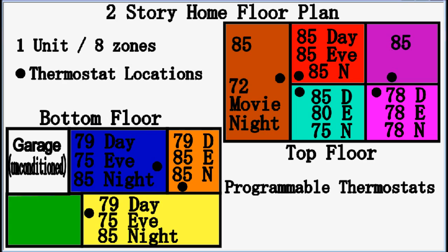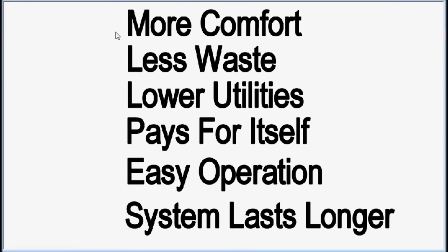That gives you a basic understanding. This next clip goes over some key points: you're going to be more comfortable in the areas you're using. Because you're shutting areas that you're not using, you have less waste, which in turn lowers your utility bills, which in turn helps pay for the new zone system. Easy operation — we don't do anything differently than controlling your current system. Each zone operates off a thermostat, and you can program it for automatic changeover. It does the same thing for air conditioning as it does for heating. Because of lower utilities and less waste, the system lasts longer and doesn't have to run as much — it's only running for the areas you're trying to cool.